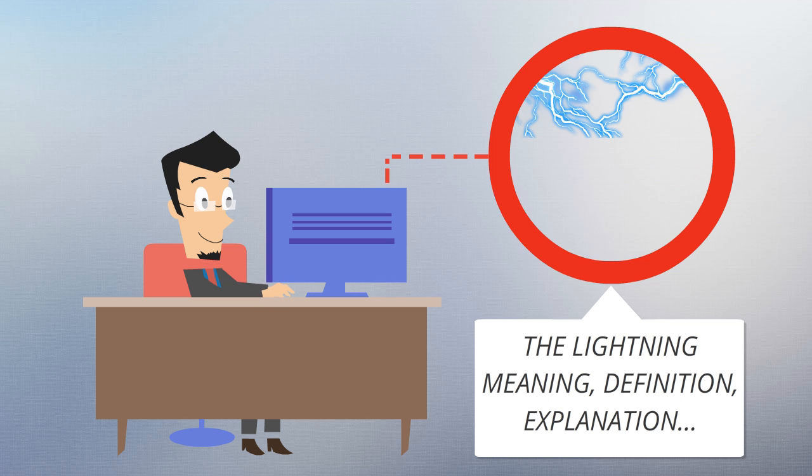Lightning creates light in the form of black body radiation from the very hot plasma created by the electron flow, and sound in the form of thunder.